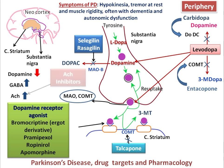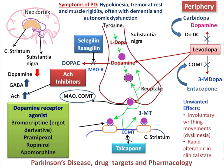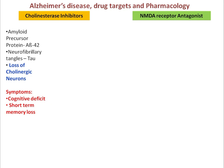The common unwanted effects associated with levodopa are involuntary movements, which is dyskinesia, and rapid alteration in the clinical state. This concludes the overall picture of Parkinson's disease drug targets and pharmacology. Now we are moving on to discuss Alzheimer's disease.